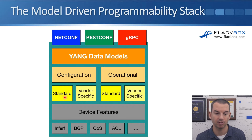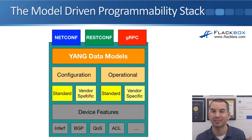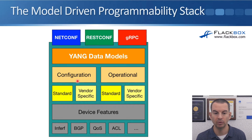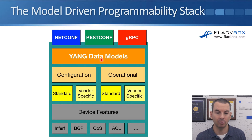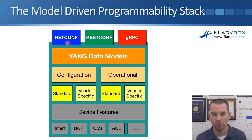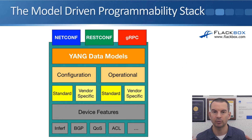There can also be vendor-specific modules as well, because you might have a particular network device with features specific to that device — in that case, the vendor would have a vendor-specific module. These are laid out into modules describing the configuration and also the operational status. So we've got our YANG data models residing on the device, and if we want to interact with that information — reading it or pushing information to the device — then we can use NetConf, RESTConf, or gRPC. Those are our transports to interact with the YANG data.